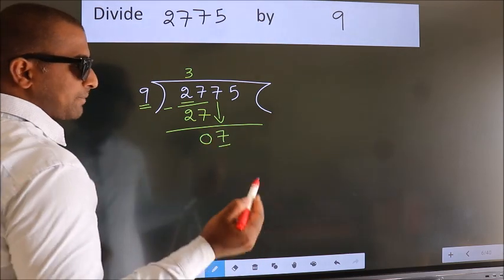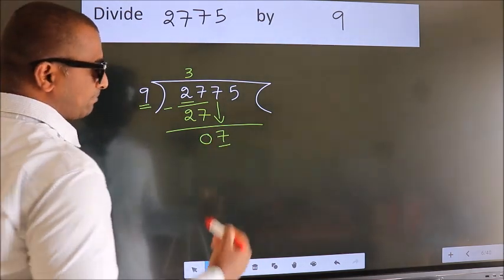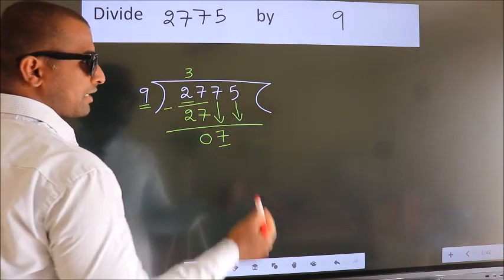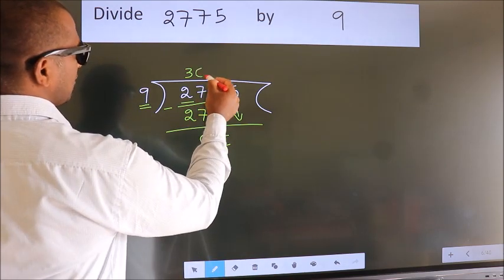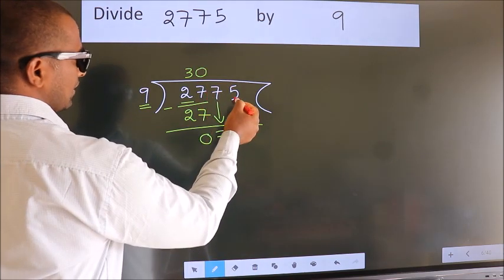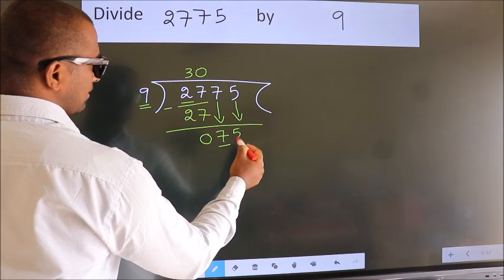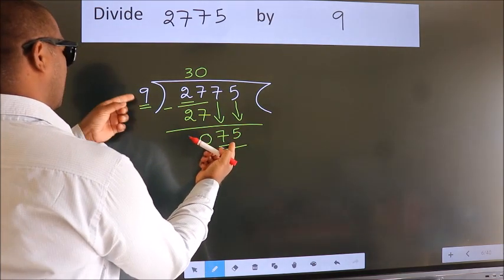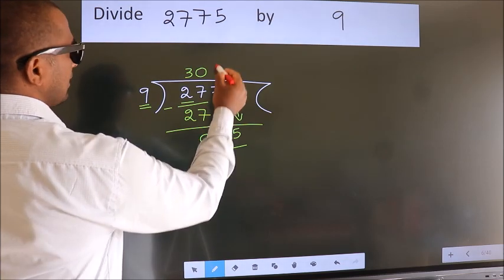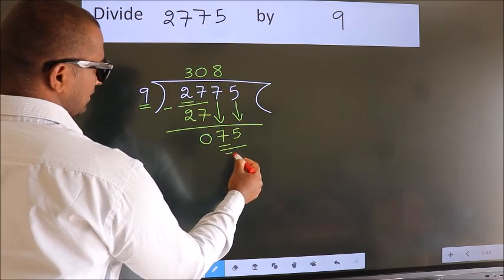So we should bring down the second number. And the rule to bring down the second number is, put 0 here. Then only we can bring down this number. So 75. A number close to 75 in the 9 table is 9 eights, 72.